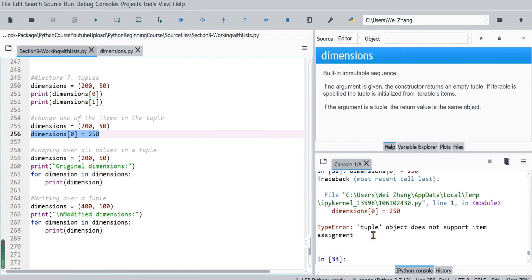Python shows an error in this file's first line, because we only run this line. Type error: tuple object does not support item assignment.